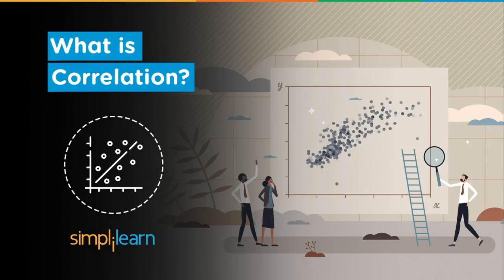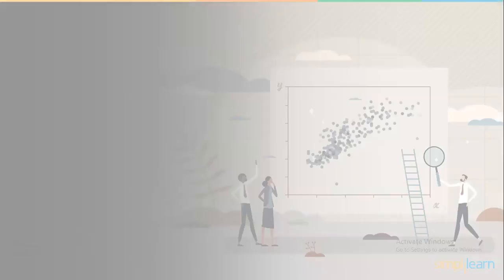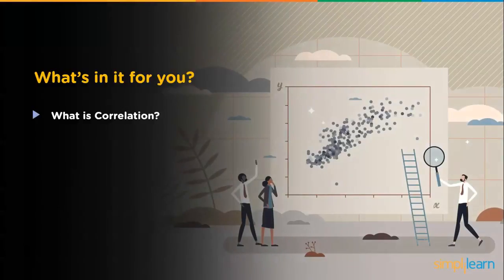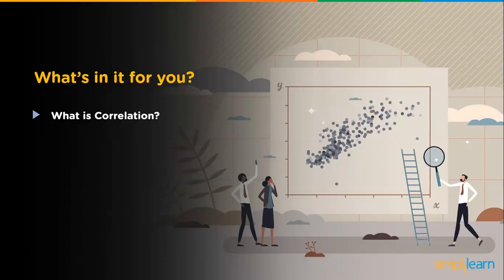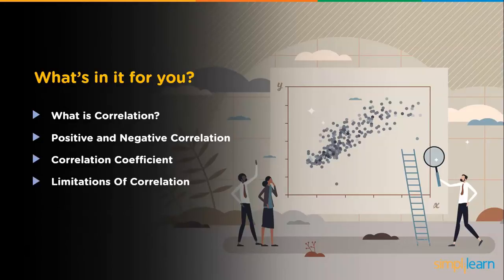So let's discuss the agenda for today's session. We will start this tutorial by understanding what is correlation. Then we will move on to discuss the two types of correlation and correlation coefficient. After that, we will see the limitations of correlation and some real life applications of correlation.